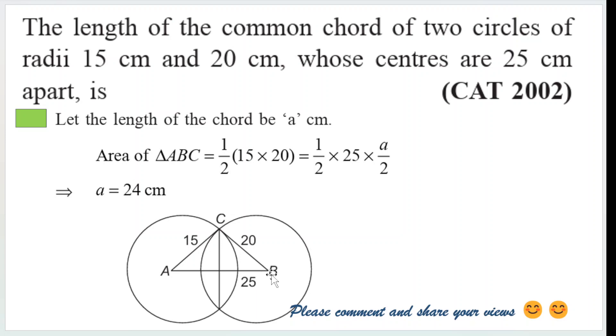Because this line connecting the centers will divide the common chord into two equal parts, right. Half into 25 into A by 2, this is equal to half into 15 into 20.